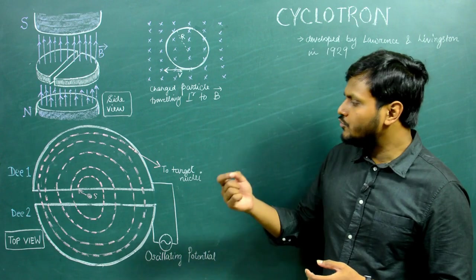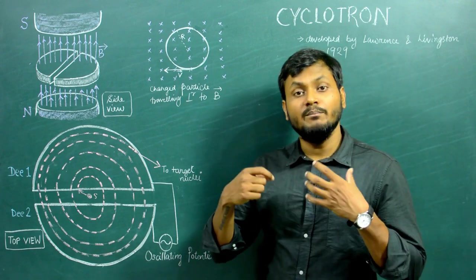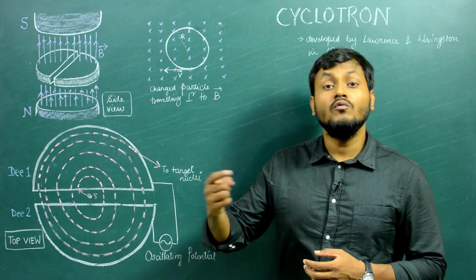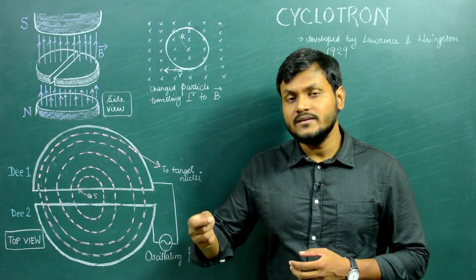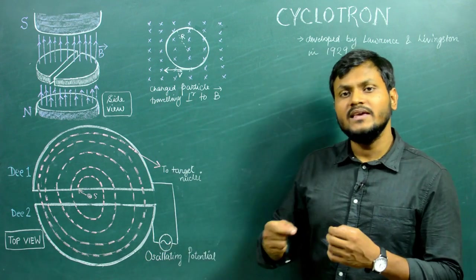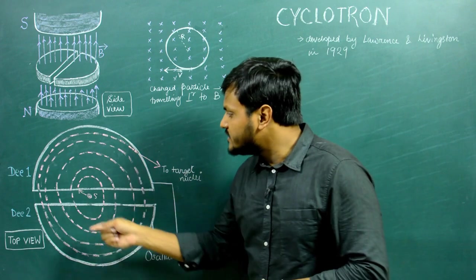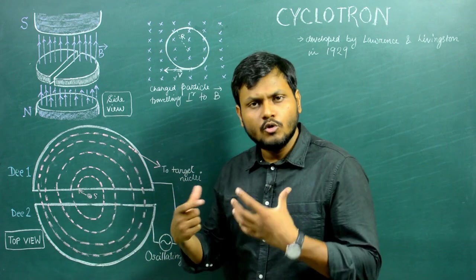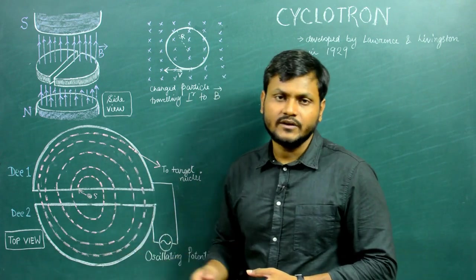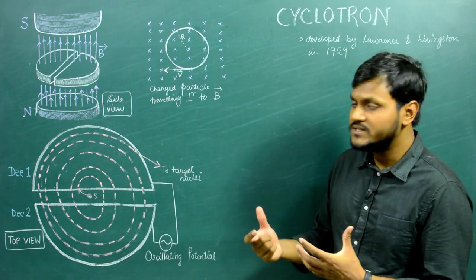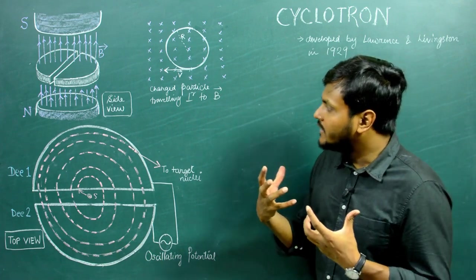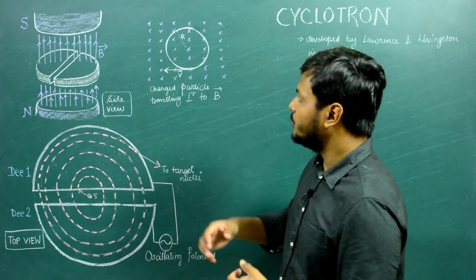So in a cyclotron, a charged particle is made to pass through an electric field over and over again repeatedly in a very compact space, by making it traverse in a circular or, more precisely speaking, a spiral kind of trajectory. But how does this happen? To understand, let's first look at the construction of a cyclotron.